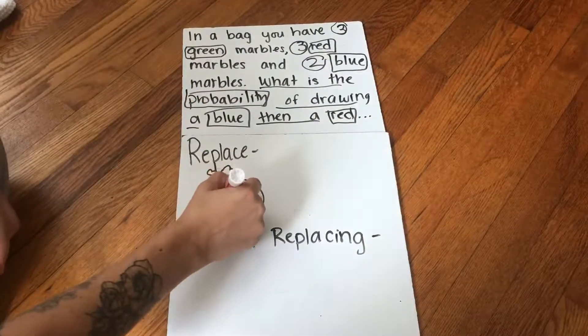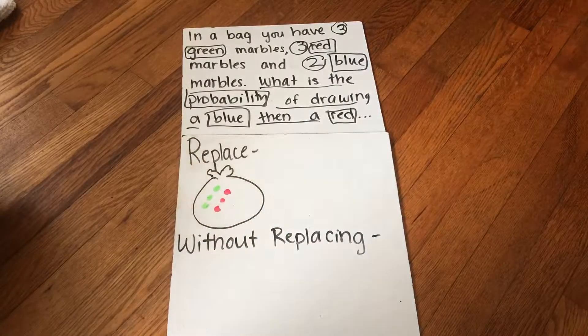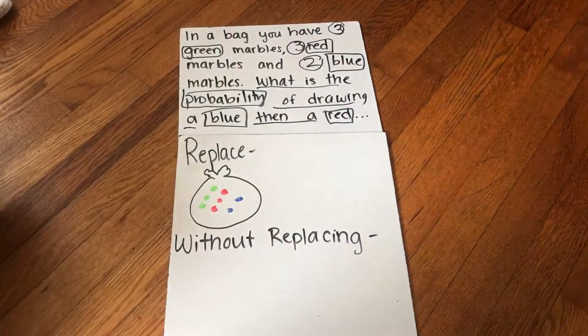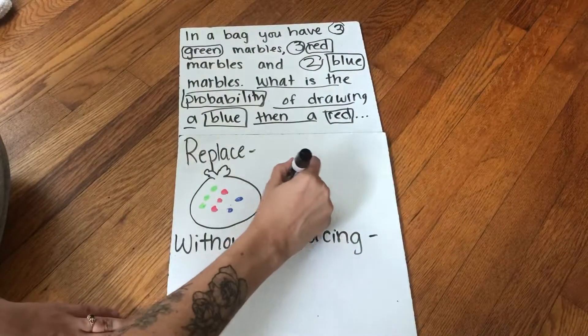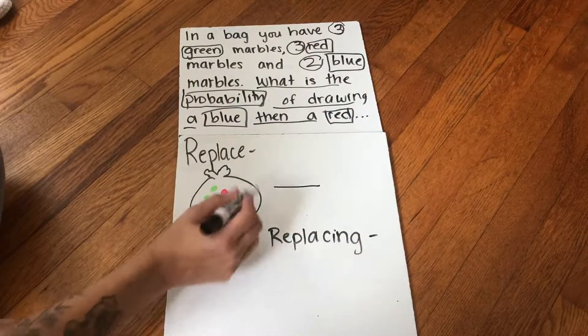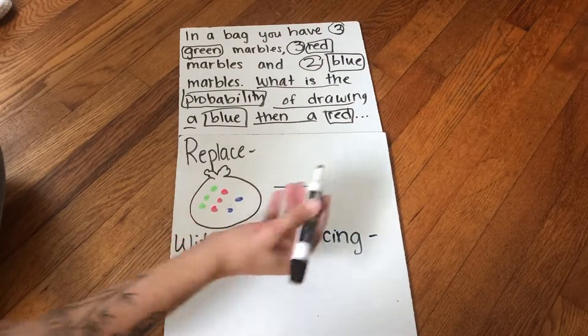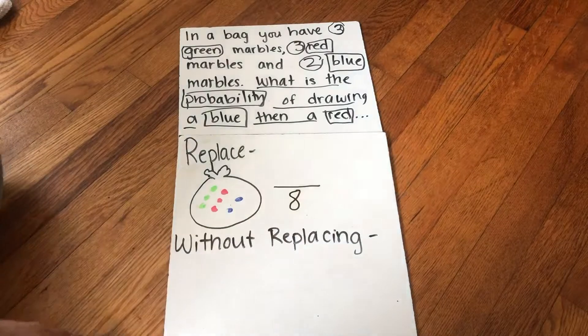three red and two blue. And I know my part goes over my whole and the whole is how many marbles are in total. So it's one, two, three, four, five, six, seven, eight. I have eight marbles in total.